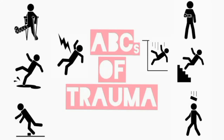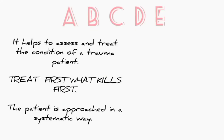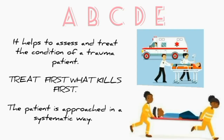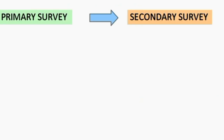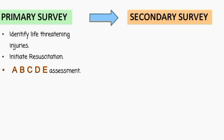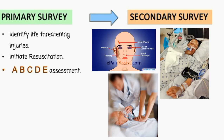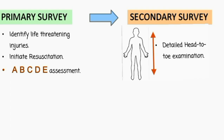In this video we are going to discuss the ABCs of trauma. ABCDE is a mnemonic to help you assess and treat the condition of a trauma patient. It helps to prioritize to treat first what kills first. No matter the cause or severity of the trauma, the patient is approached in a systematic way, starting with primary survey followed by secondary survey. Primary survey is used to identify life-threatening injuries and initiate resuscitation, and includes ABCDE assessment. Secondary survey is used for a detailed head-to-toe examination.